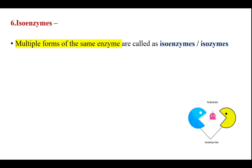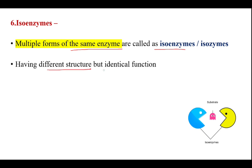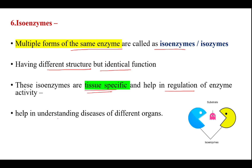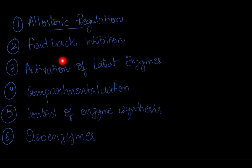Next, isoenzymes: the presence of isoenzymes also helps in regulating enzyme activity. Multiple forms of the same enzyme are called isoenzymes or isozymes. They have different structures but identical function. These isoenzymes are tissue-specific but help in the regulation of enzyme activity and in understanding diseases of different organs. Examples include isoenzymes of lactate dehydrogenase and CPK. These are all the different types of regulation of enzyme activity: allosteric regulation, feedback inhibition, activation of latent enzymes, compartmentalization, control of enzyme synthesis, and isoenzymes.